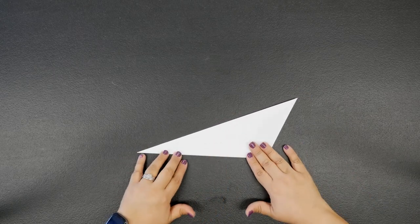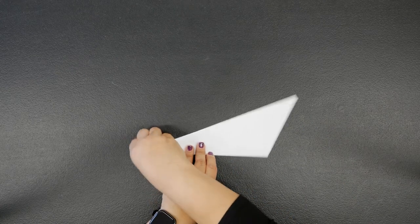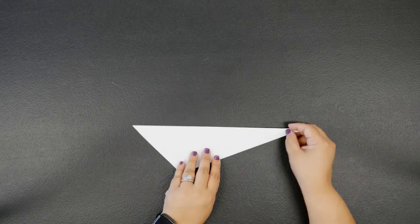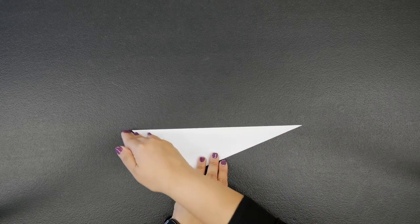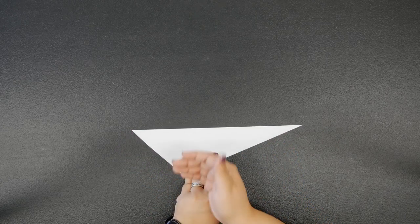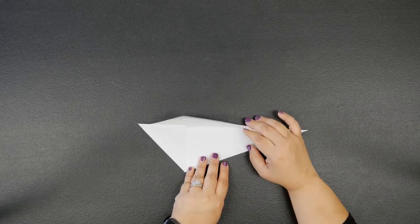After this we want to make sure that our long point here is facing the right, so go ahead and flip it over, and then the diagonal side here is facing the left side, making sure that the flaps open on the bottom section.